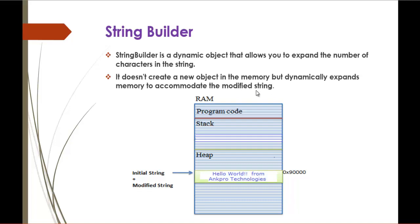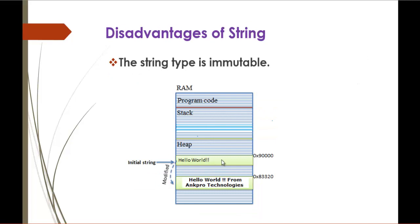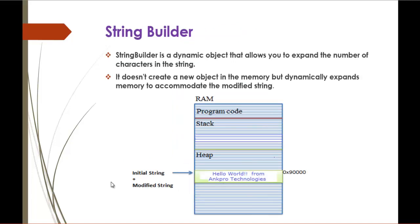In the previous slide, if I have a value called 'Hello World' and I want to alter it to 'Hello World from Angpro Technologies', instead of allocating a new memory space on the heap as a regular string would, StringBuilder keeps the modified string in the same memory space. You can observe that 'Hello World' is altered to 'Hello World from Angpro Technologies' and still remains in the same memory space.